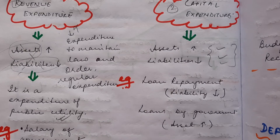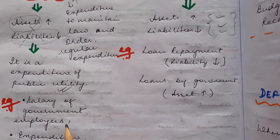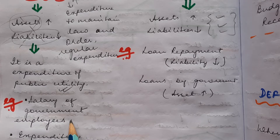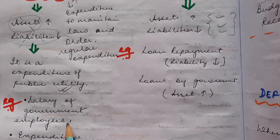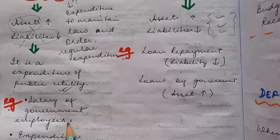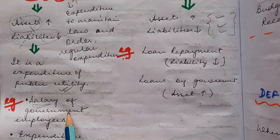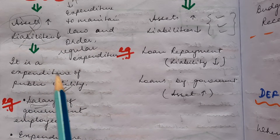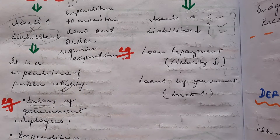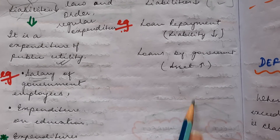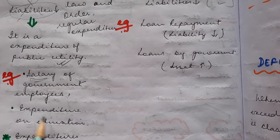The salary of government employees is another example — here also there is no increase in assets or decrease in liabilities, but an expenditure is made by the government. So salary of government employees is an example of revenue expenditure. Expenditure on education is also a very good example of revenue expenditure.